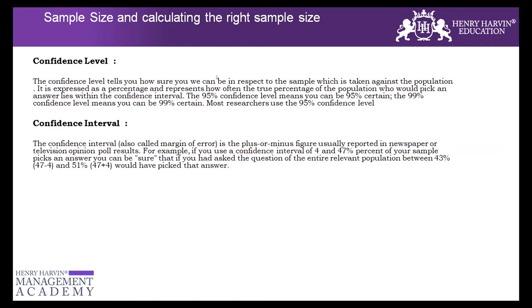If you don't have historical data, you go with a 50% proportion defective. If you have historical data, then you take the actual defect rate. I wasn't aware of that — thank you.